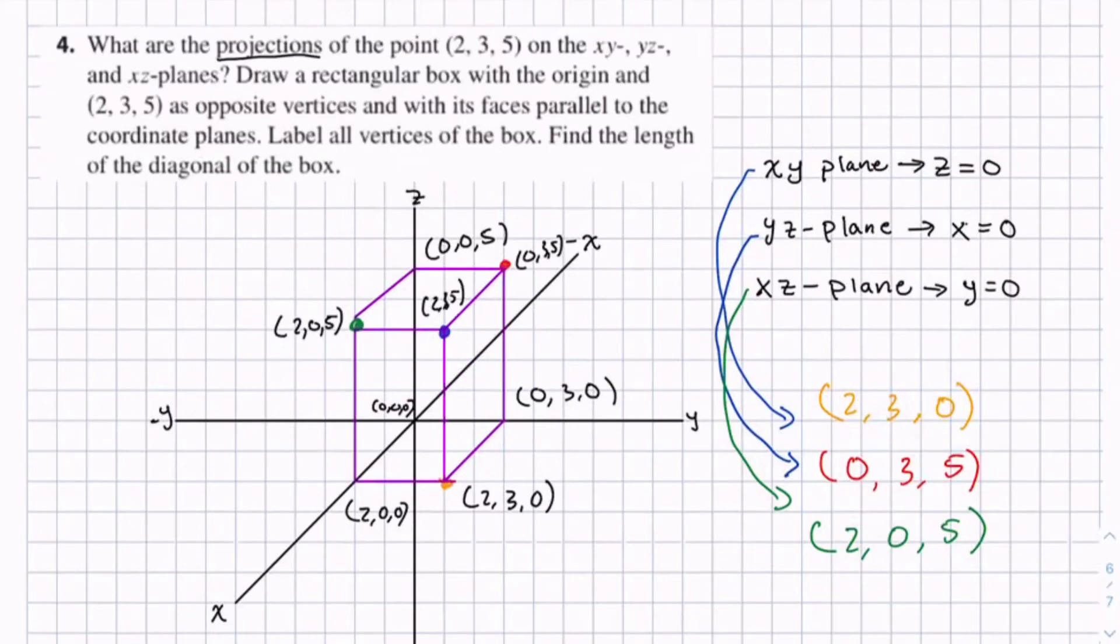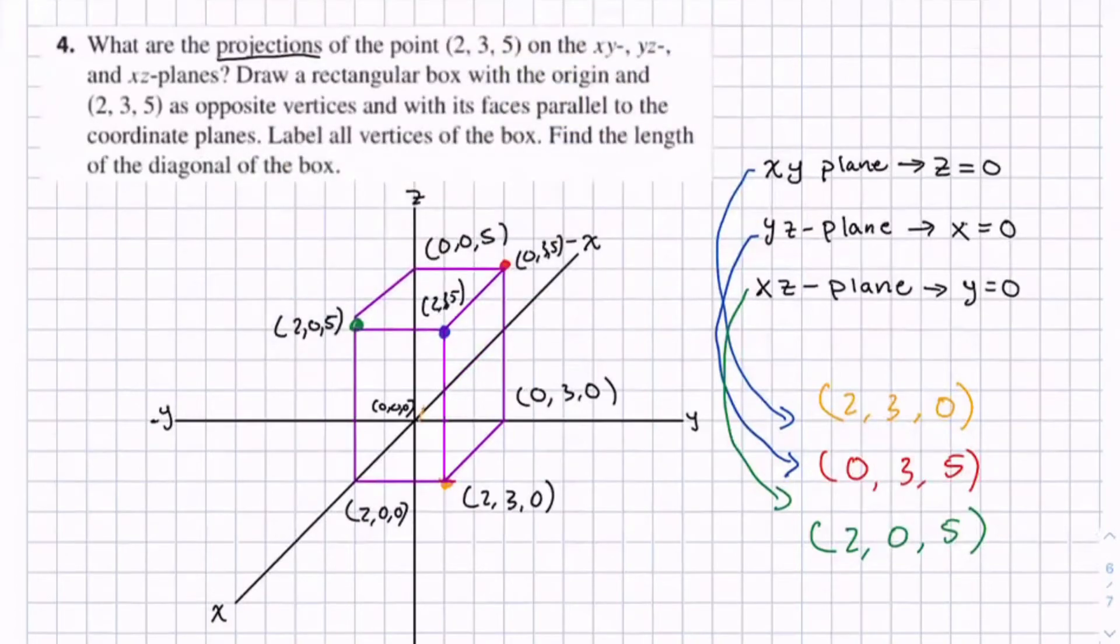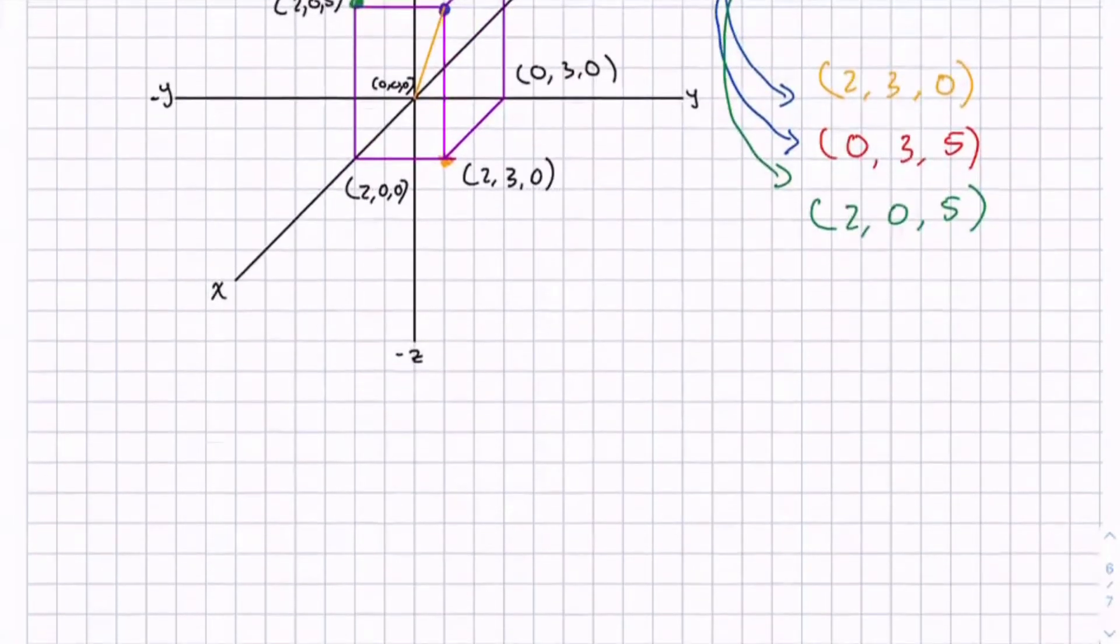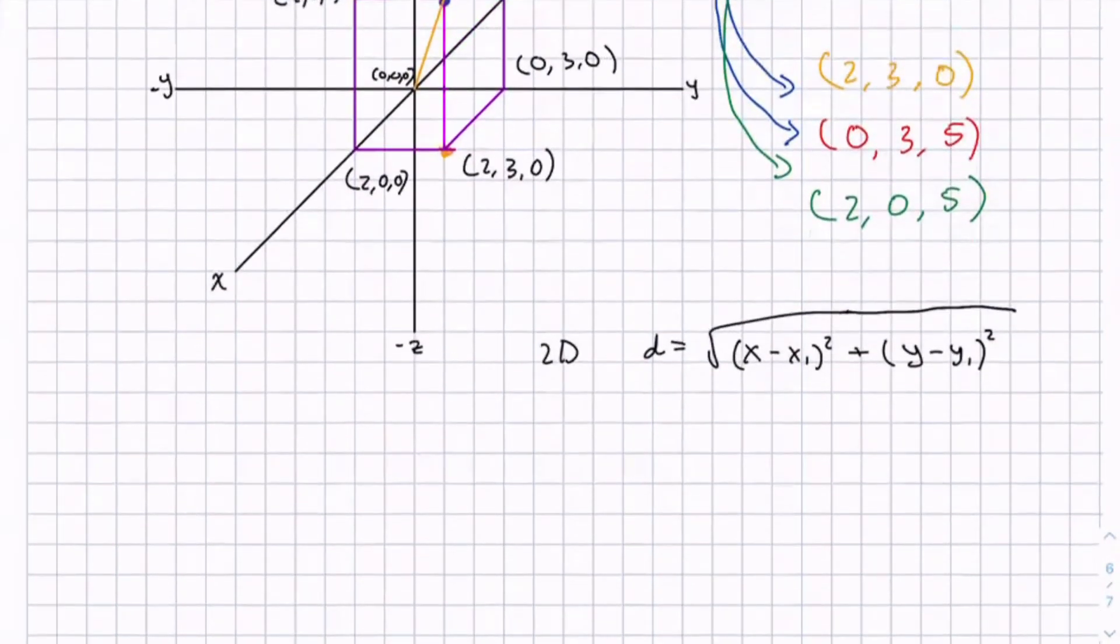So we have to find the length of the diagonal of the box and this happens from the origin to the 2, 3, 5 point. So I'm just going to draw what the diagonal would look like. And the formula for the distance between points is basically the same thing in 2D. In 2D you could derive some type of equation where the distance would equal (x - x1)² + (y - y1)². This comes from Pythagorean theorem and there's a similar way to prove it for 3D but most things in 3D can be built off of 2D. So same with this formula.